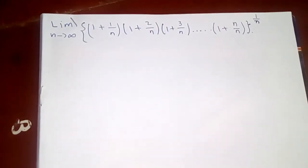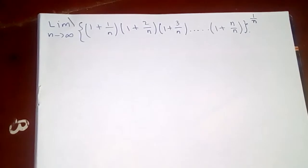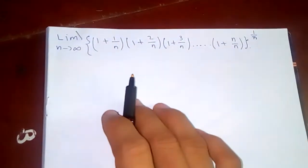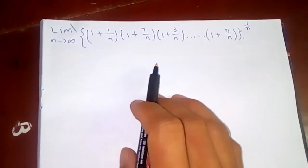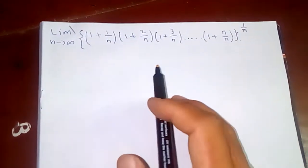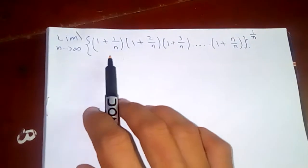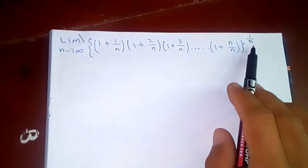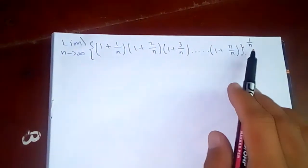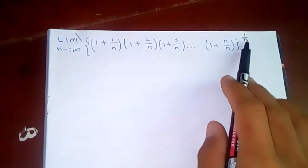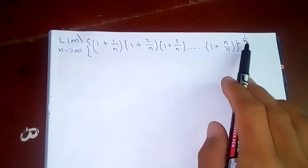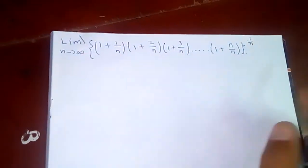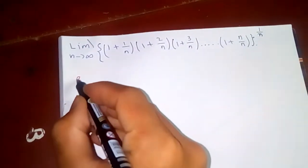Thanks for watching my video. Today we are going to evaluate a limit using a definite integral. Now, if I plug infinity here, one by infinity means zero, so this term is to the power zero — it seems like we cannot evaluate it directly. Let's try another way.